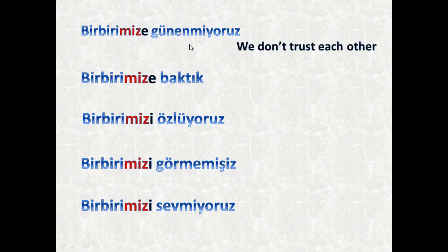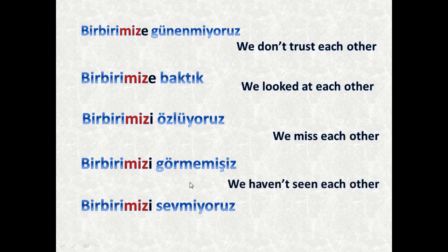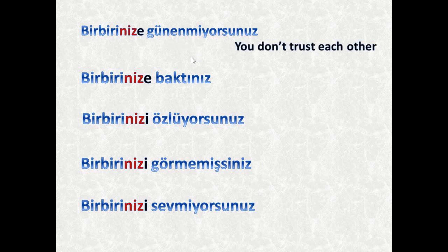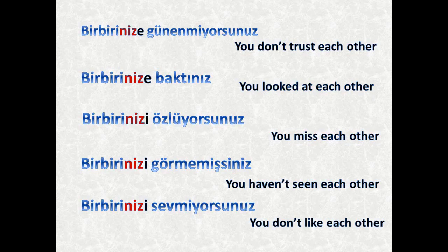Birbirimize güvenmiyoruz — we don't trust each other. Birbirimize baktık — we looked at each other. Birbirimizi özlüyoruz — we miss each other. Birbirimizi görmemişiz — we haven't seen each other. Birbirimizi sevmiyoruz — we don't like each other. Then for 'you': Birbirinize güvenmiyorsunuz — you don't trust each other. Birbirinize baktınız — you looked at each other. Birbirinizi özlüyorsunuz — you miss each other. Birbirinizi görmemişsiniz — you haven't seen each other. Birbirinizi sevmiyorsunuz — you don't like each other.